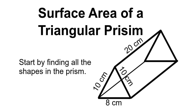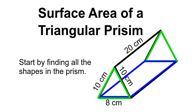Surface area of a triangular prism. Start by finding all the shapes in the prism. The first shape is going to be a triangle, and there are two of those. The next shape will be a rectangle on the base — there's one of those. And the last shape will be a rectangle on either side, and there are two of those. There are five shapes in all.